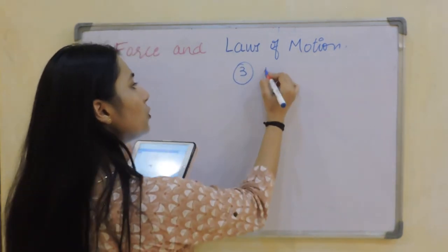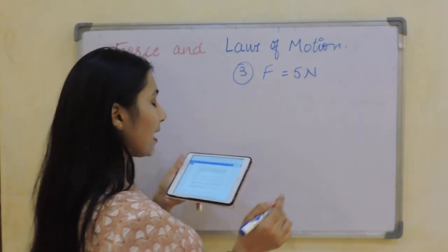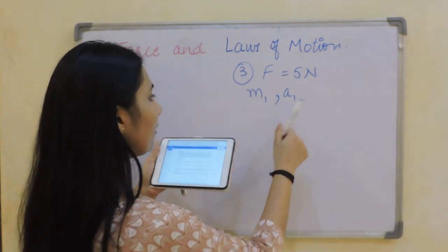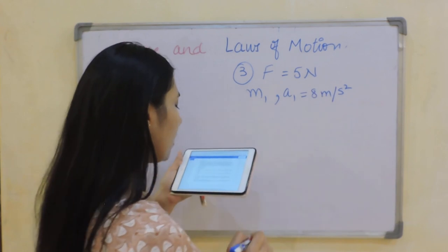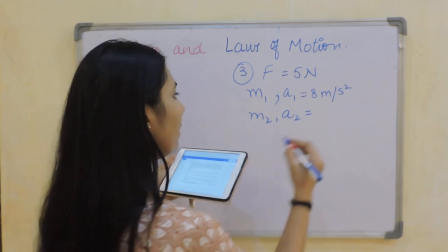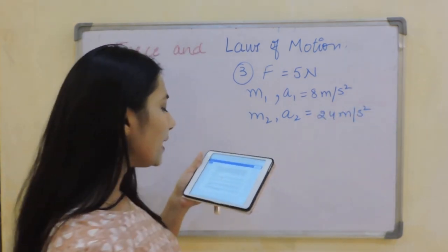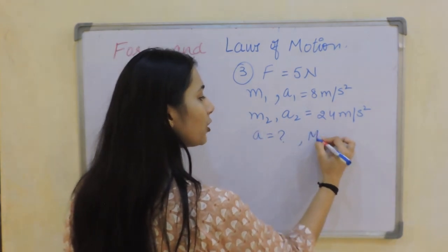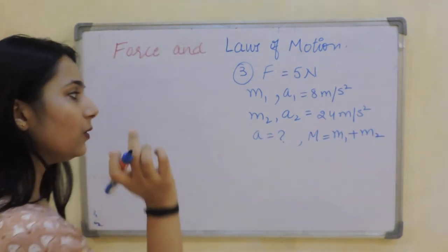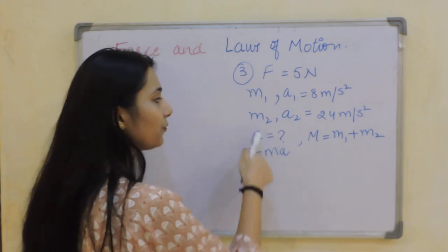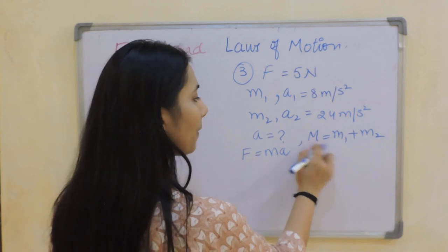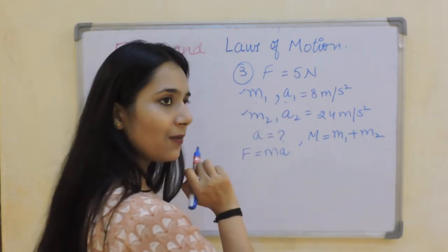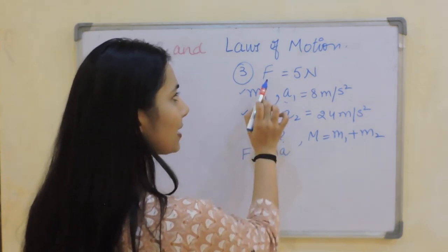A force of 5 Newton gives mass M1 an acceleration of 8 m/s² and mass M2 an acceleration of 24 m/s². What acceleration would it give if both masses are tied together? For that case, M equals M1 plus M2. I need to find M1 and M2 first. M1 equals F divided by A1, and M2 equals F divided by A2 — since I have F and the respective accelerations.